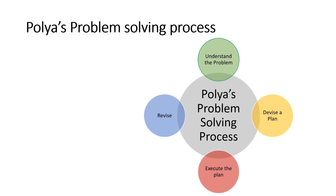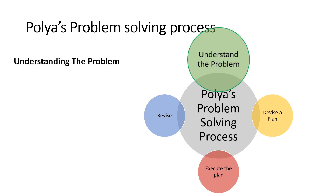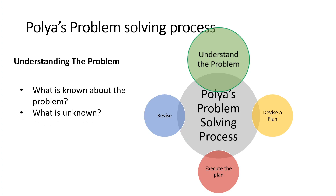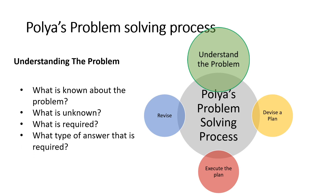Let us do a quick review of Polya's problem-solving process. Whenever there is a need to solve any school management problem, we must first understand the very nature of the problem. This means that we need to dissect the problem by exploring all possible angles so as to determine what is known about the problem. The problem solver also needs to be acutely aware of what is unknown about the problem and what is required to solve it. Finally, understanding the problem involves determining what type of answer is required to solve the problem. In this case, it may require some form of intervention.